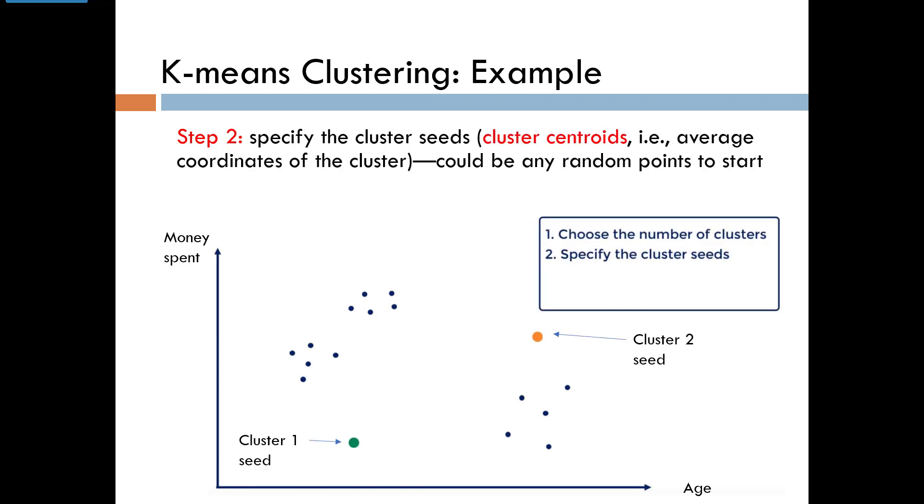In step 2, pick the center point or seed of each cluster called the centroid. The starting seeds could be any random points. In the next few steps, they will move to more appropriate locations. The cluster 1 seed is shown as a green dot and the cluster 2 seed as an orange dot.